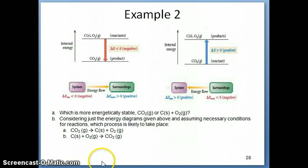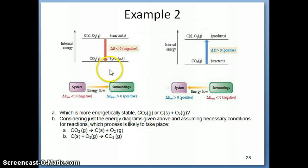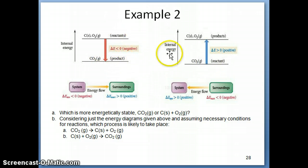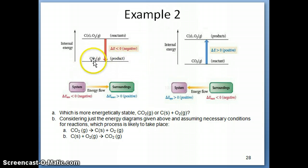The more stable species is the one lower in energy. In both diagrams it's the same energy diagram, just illustrating different reactions. CO2 is the more stable species — CO2 is more stable compared to the separated elements.